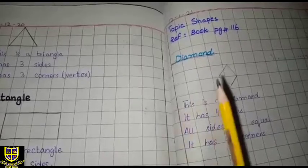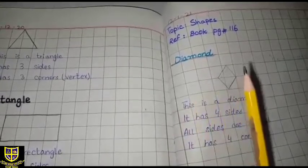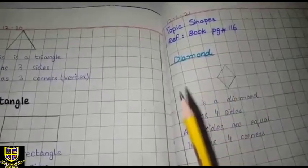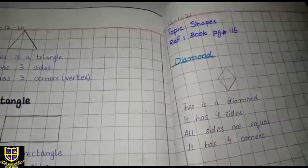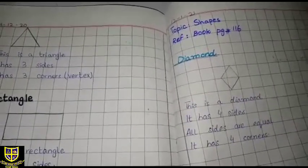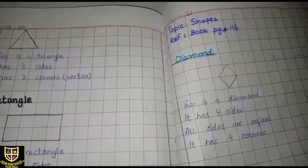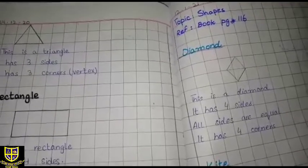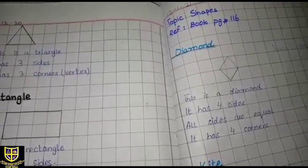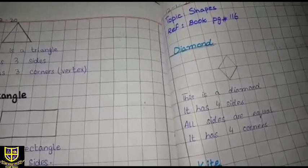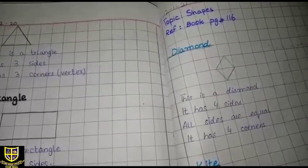Topic name is shapes. Reference book page number 116. Fine. Previous lecture we have discussed about basic shapes: square, triangle, and rectangle. So today we will discuss diamond or kite, meaning more shapes.